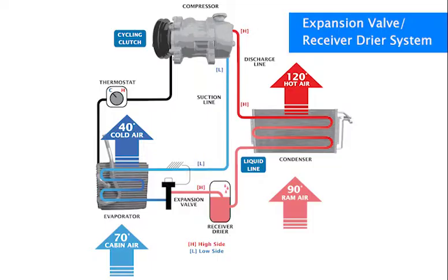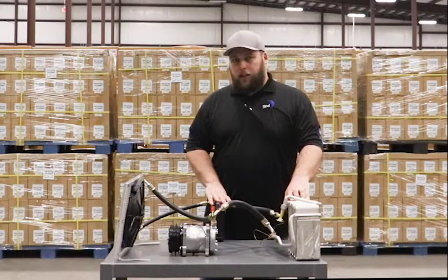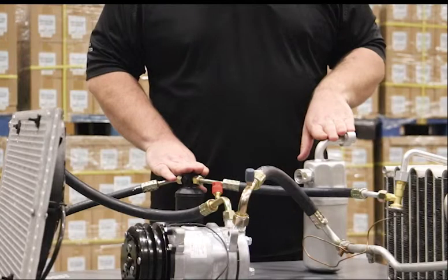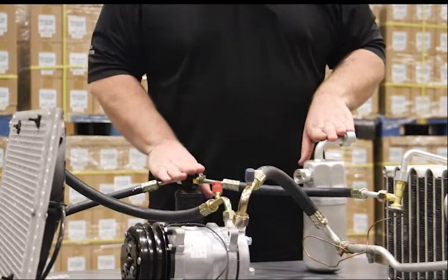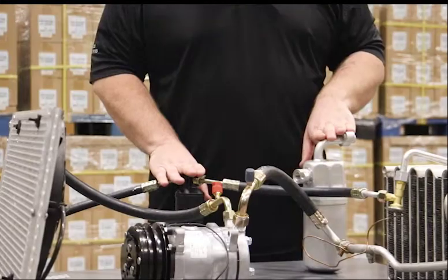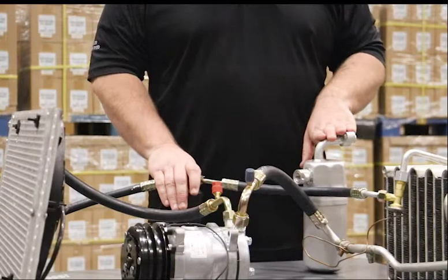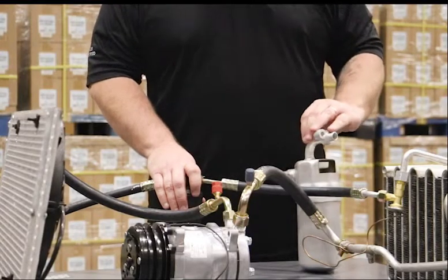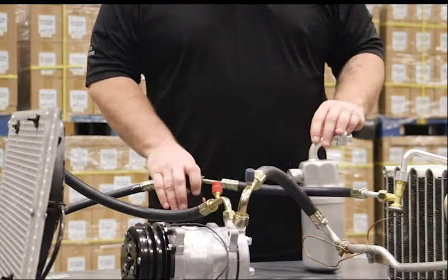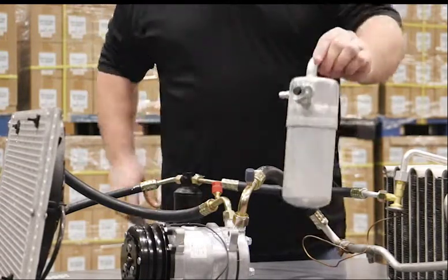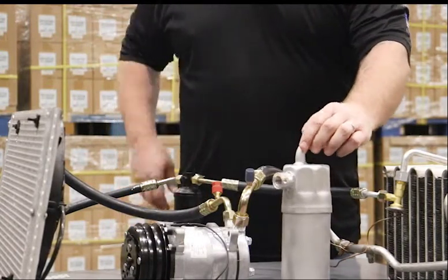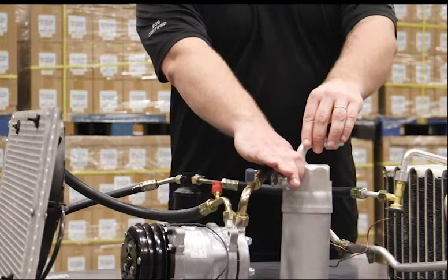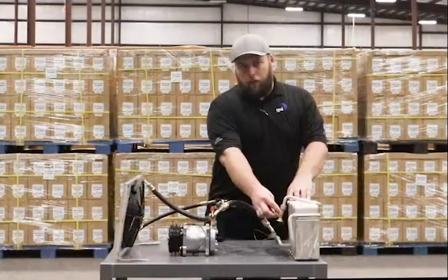This type is an expansion valve dryer system. The difference here is you have a dryer in the liquid line to take any moisture out of the system. A dryer basically has a desiccant in it to remove moisture, plus it also has some filtering properties to keep any debris from moving throughout the system. An accumulator also has a desiccant in it, but the difference is the accumulator is in your suction line, which allows any liquid refrigerant more time to evaporate to a gas before it gets back to the compressor.